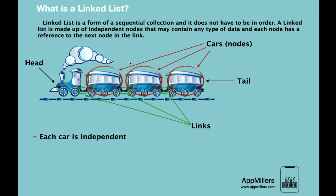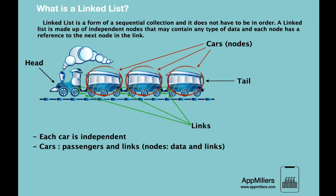Another feature is that we can enter any of these cars in a sequential manner. While the train is going, we cannot jump from one compartment to another — we have to go through each one. This is the same in a linked list: if you want to reach the last node, we have to traverse through all nodes. Each element consists of two parts: data and a link to the next node.